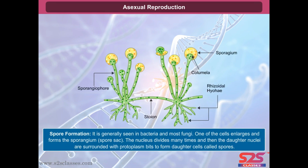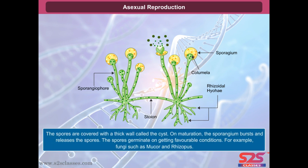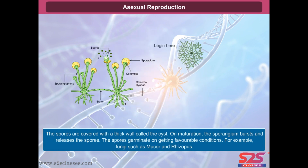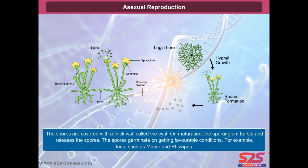Spore formation is generally seen in bacteria and most fungi. One of the cells enlarges and forms the sporangium, or spore sac. The nucleus divides many times, and then the daughter nuclei are surrounded with protoplasm bits to form daughter cells called spores. The spores are covered with a thick wall called the cyst. On maturation, the sporangium bursts and releases the spores. The spores germinate on getting favorable conditions. Examples include fungi such as mucor and rhizopus.